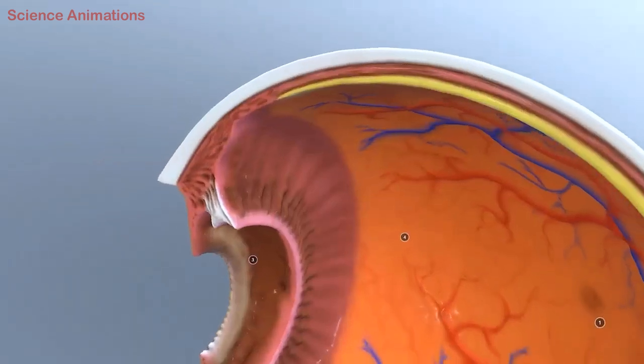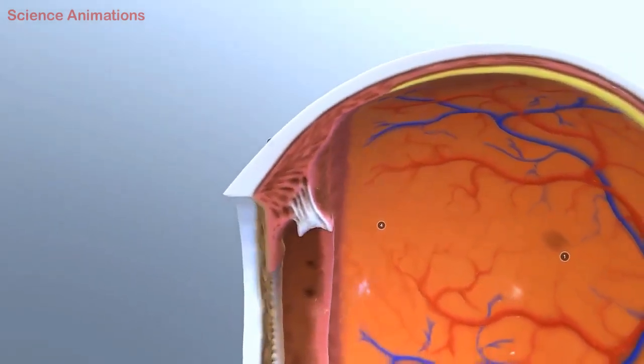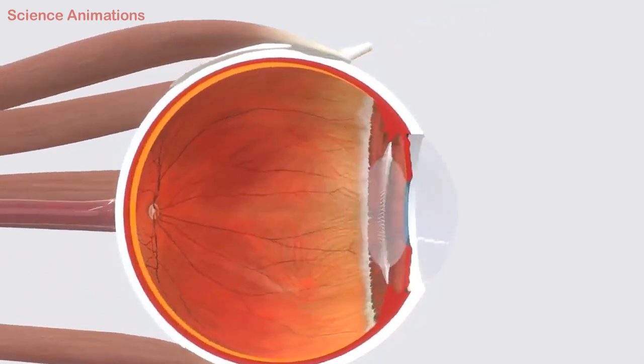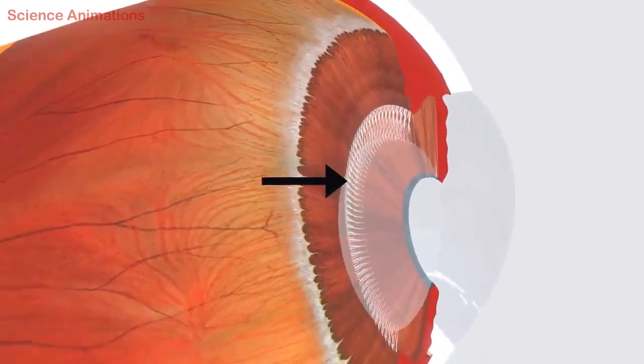The ciliary bodies are a continuation of the choroid in the anterior direction and contain ciliary muscles. These ciliary muscles are attached to the lens through suspensory ligaments. The lens present in the eye is also attached to the ciliary body.